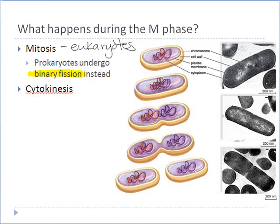In a bacterial or prokaryotic cell, we make a copy of the DNA, then simply shuttle one piece of DNA off to one side of the cell and the other circular piece of DNA to the other side, pinch down the middle, and divide it into two separate cells. Very simple process — binary fission.